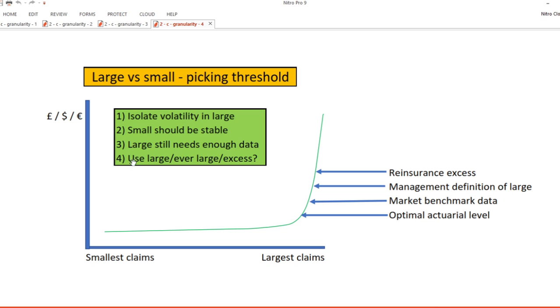Lastly, you need to consider that you would want to simply call a claim large if it's bigger than the threshold at a given development period. Hence, a single claim could jump between large and small as its value increases or decreases. Or do you want to use an ever-large definition, where claims cannot move back into small having ever been large? Or do you want to slice individual claims into capped and excess portions, below and above the threshold? Each of these three methods is used widely in the market and each has its own benefits.